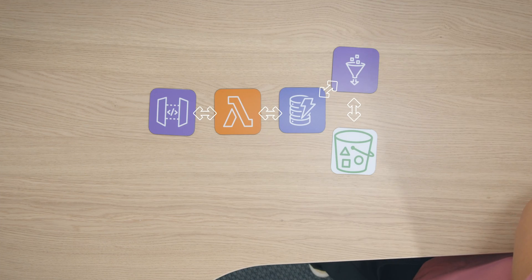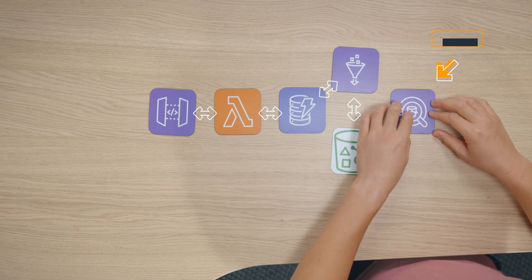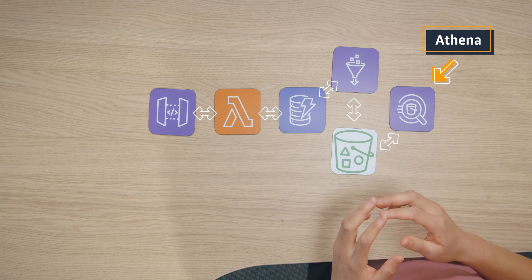Now you can query and even join the two datasets with Amazon Athena. Athena combines the strength of Presto with the serverless and self-managed capabilities of AWS — a combination that rivals peanut butter and chocolate. Amazon Athena uses a managed data catalog to store information and schemas about the databases and tables that you create for your data stored in Amazon S3.